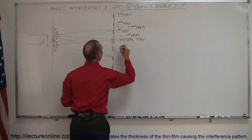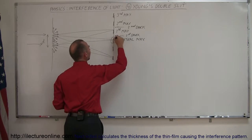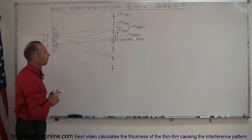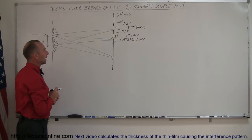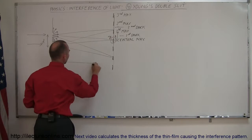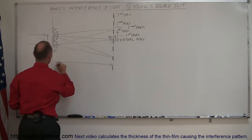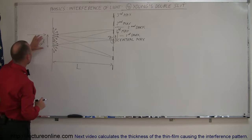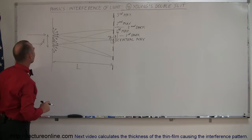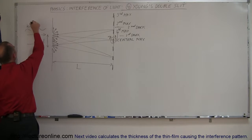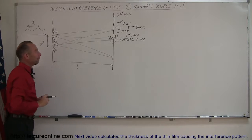The question is: how far away from the central maximum do these dark and bright fringes occur? We call this distance y. The distance across to the screen we call L, and the distance between the two slits is d. We also need to know the wavelength of the light, lambda.